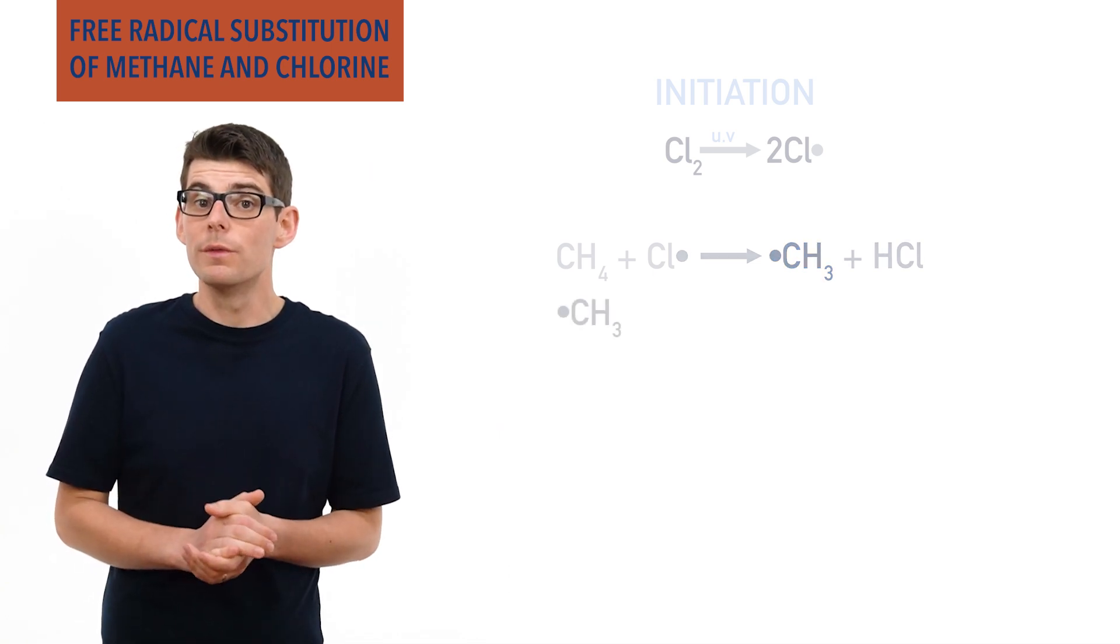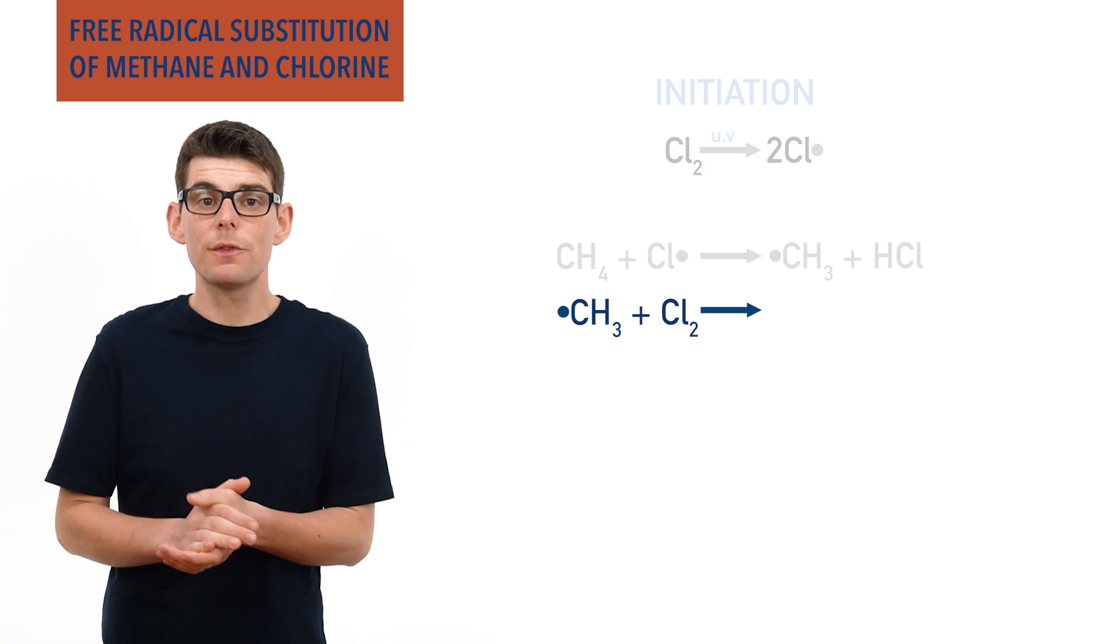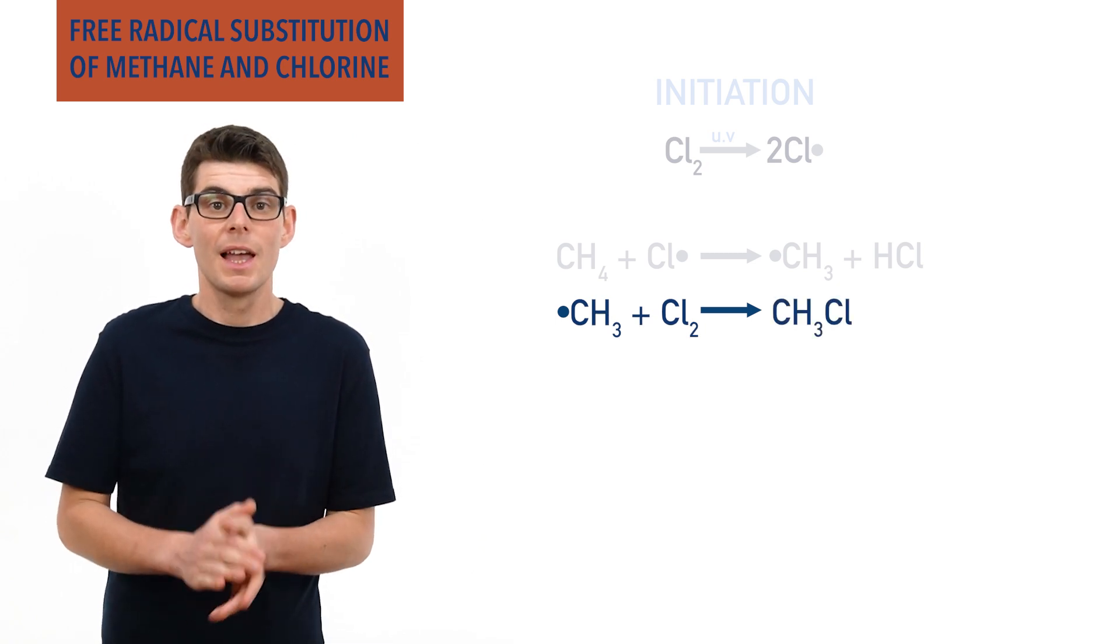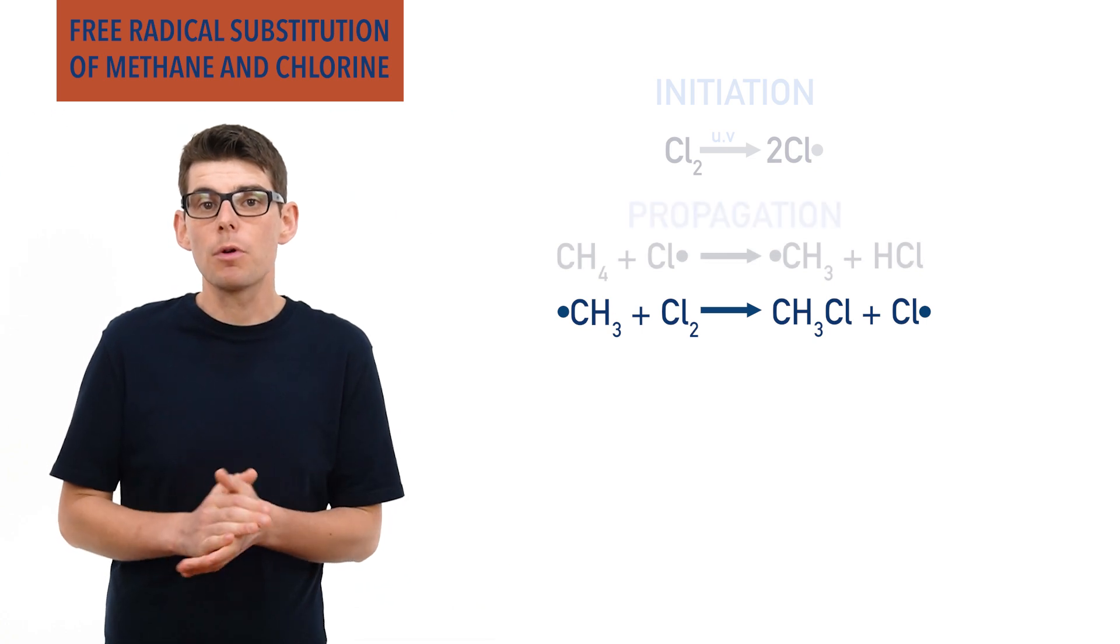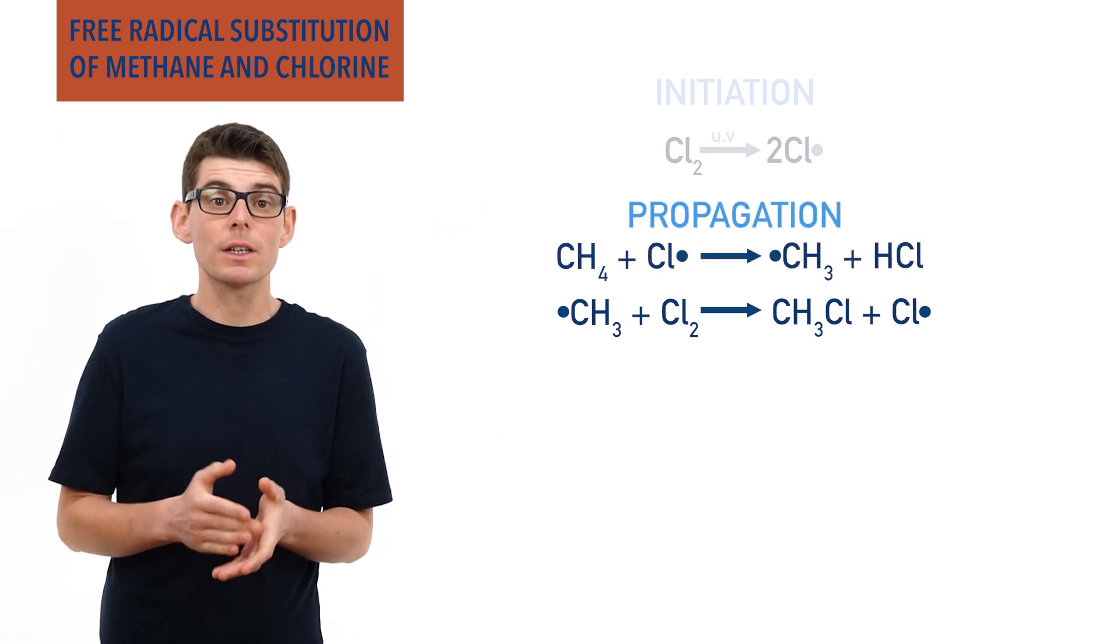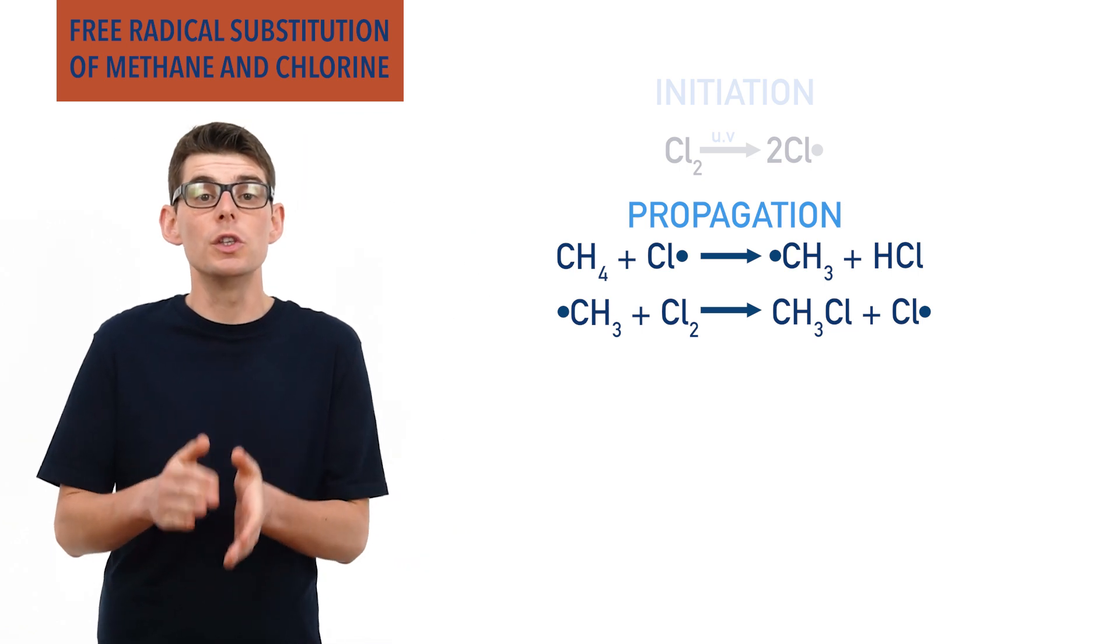The methyl radical can then react with chlorine molecules to form chloromethane, a non-radical, and a chlorine radical is produced as well. These are both propagation reactions as a radical species has reacted with a non-radical species to form a new radical.